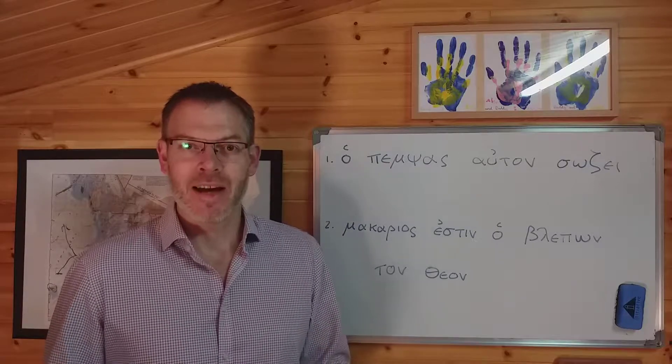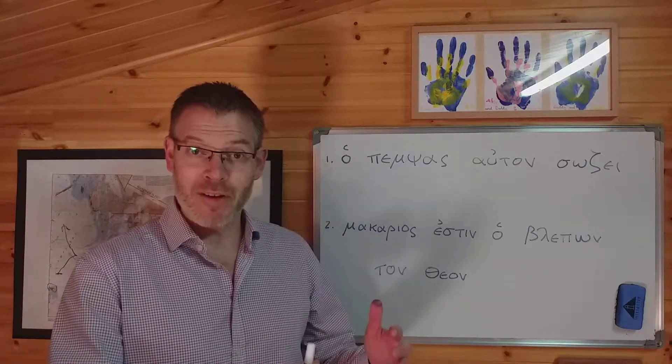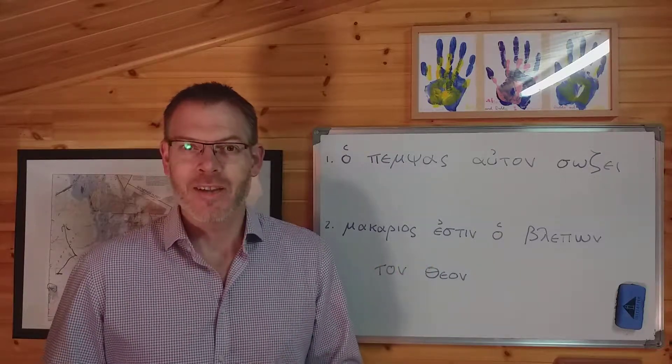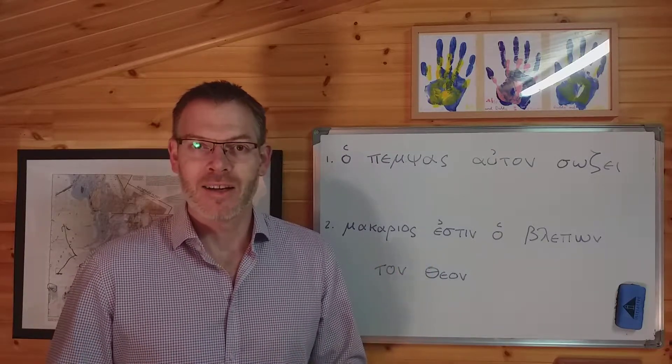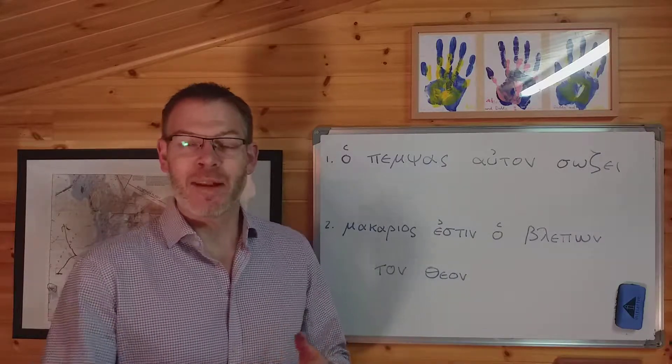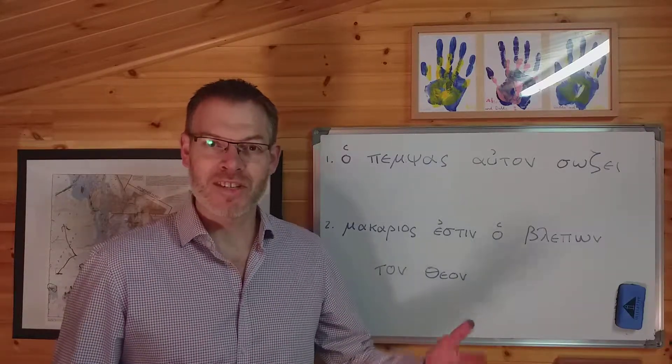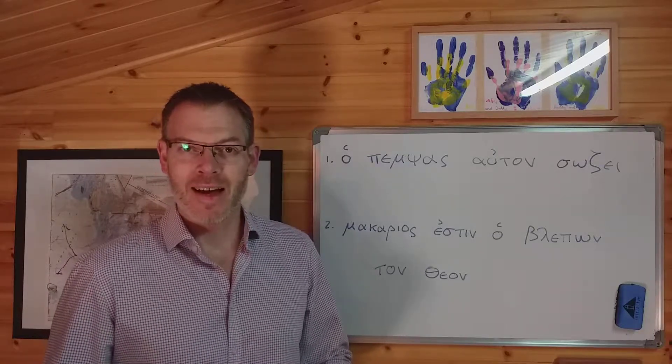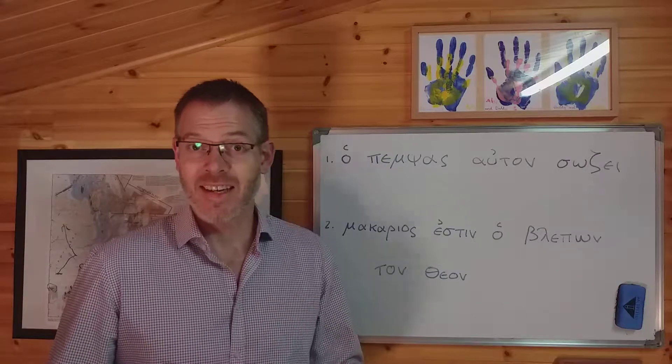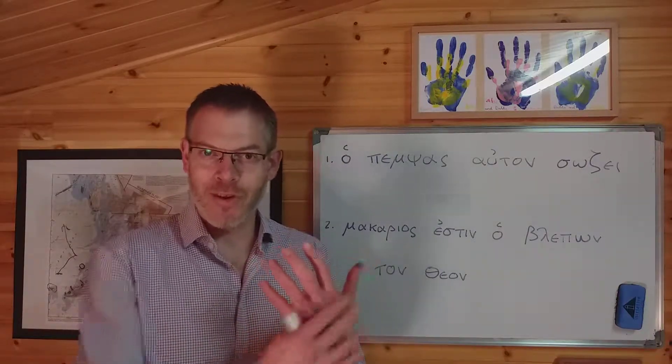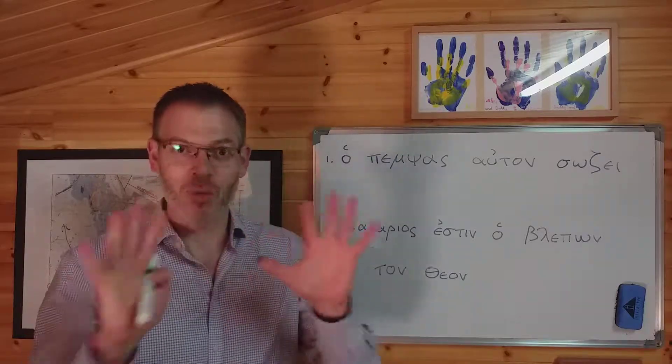Now, just to recap and remind you a couple of things from previous videos, we saw two videos ago that participles are verbal adjectives. That is, they're a little bit like verbs and they're a little bit like adjectives. They come from a verb stem and they have tense like a verb, but they also have number and gender and case like an adjective does, so they kind of cover both those bases in the grammatical world.